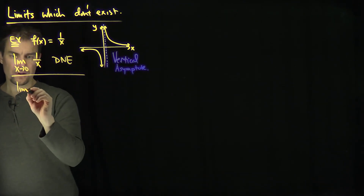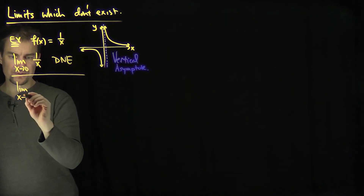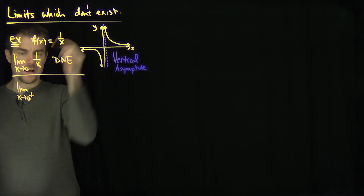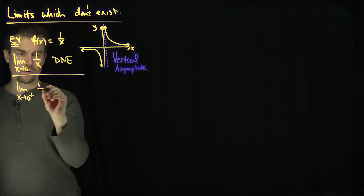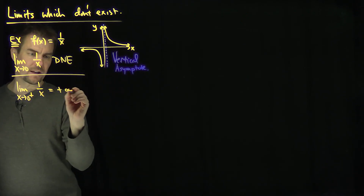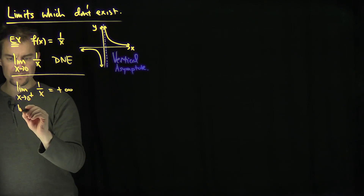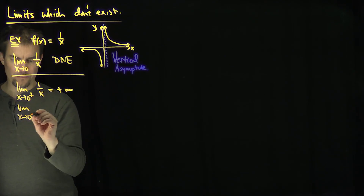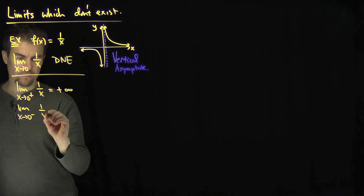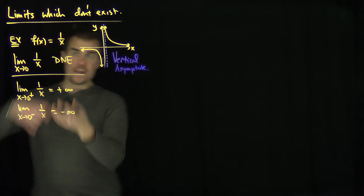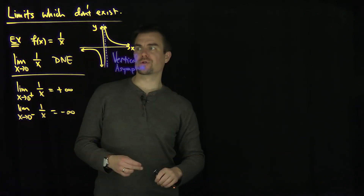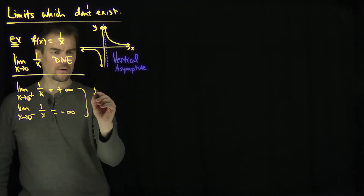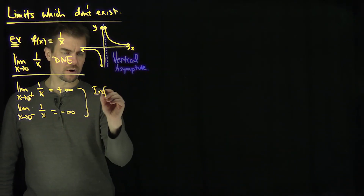In other words, the limit as x goes to 0 from the right-hand side of 1 over x is positive infinity. And the limit as x goes to 0 from the left of 1 over x is negative infinity. So you have an infinite jump, essentially. There's an infinite jump over here.